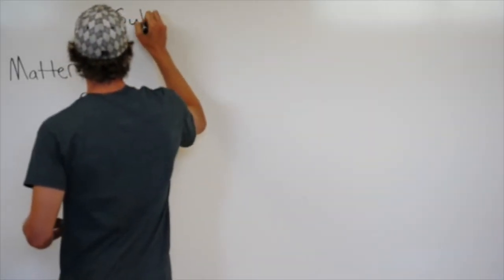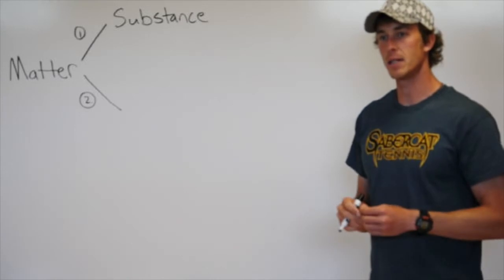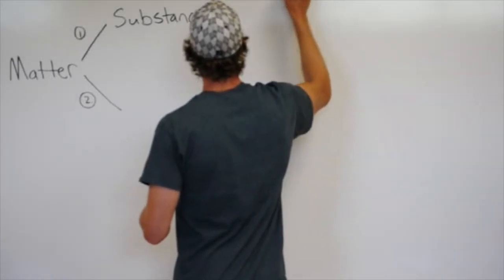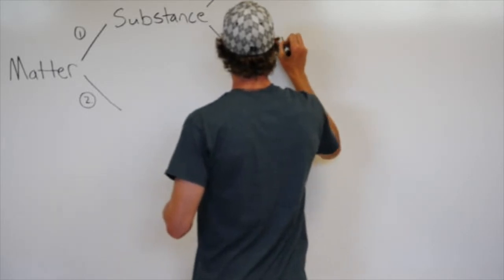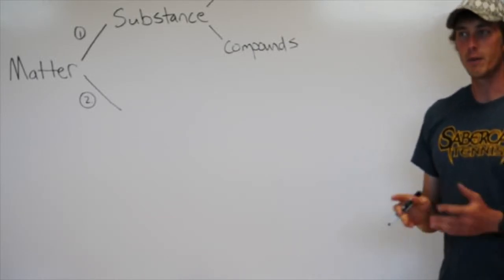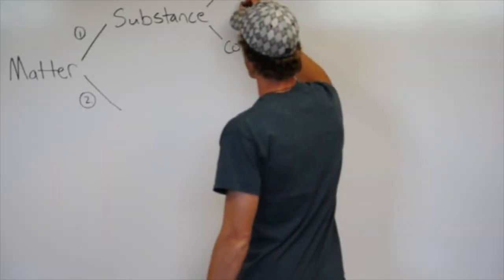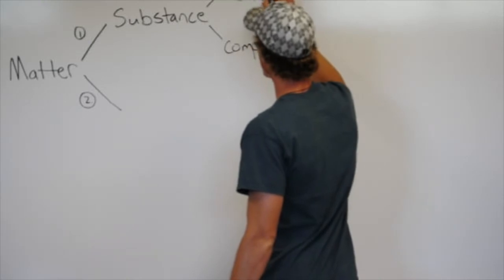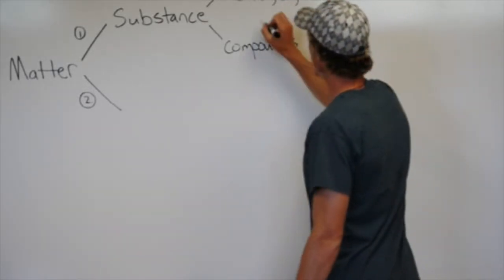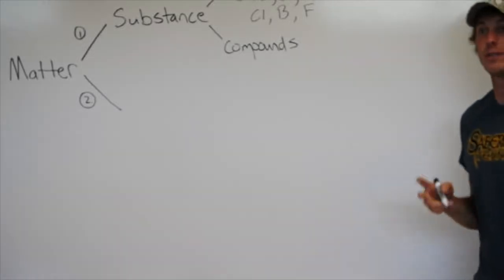When we talk about something that has just elements in it and they're bonded together, we're talking about elements and compounds. Elements and compounds are only on the periodic table. Elements are made of just single elements — for example: Na (sodium), bromine, carbon, chlorine, boron, and fluorine. All of those are examples of just single elements.